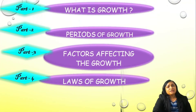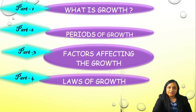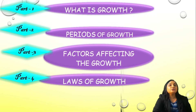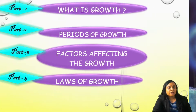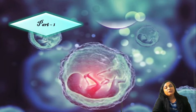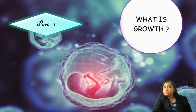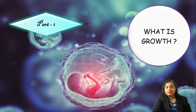For ease of understanding, I have divided this section 1 into 4 parts. Part 1 will be saying what is growth. Part 2 will denote periods of growth. Part 3 will be saying factors affecting the growth, and Part 4 will be laws of growth. So let us start with Part 1, that is, what is growth.